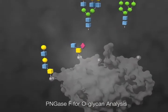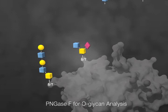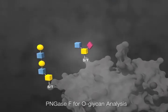One application for PNGase F is to remove all N-glycans, leaving the protein ready for O-glycan isolation.